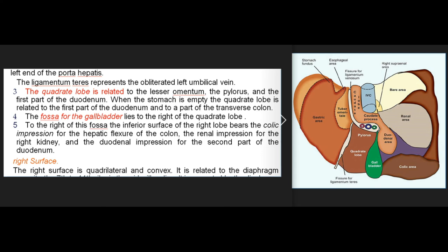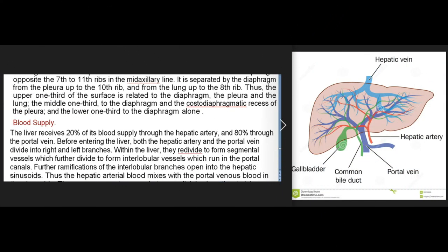Right surface: quadrilateral and convex, related to the diaphragm opposite the 7th to 11th ribs in the midaxillary line. It is separated by the diaphragm from the pleura up to the 10th rib and from the lung up to the 8th rib. Thus the upper one-third of the surface is related to the diaphragm, pleura, and lung; the middle one-third to the diaphragm and the costodiaphragmatic recess of the pleura; and the lower one-third to the diaphragm alone.